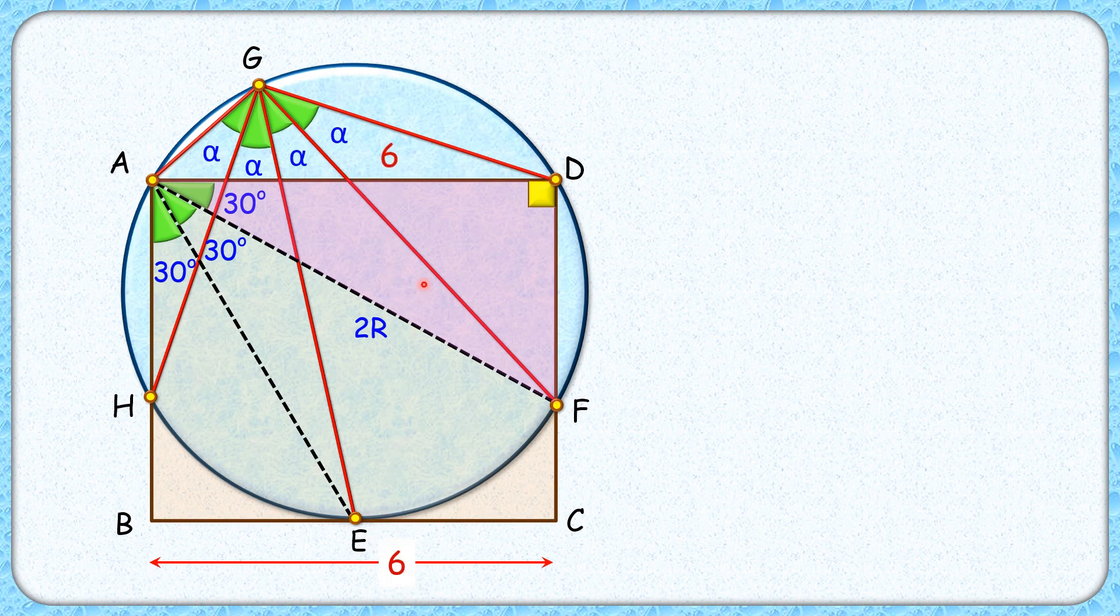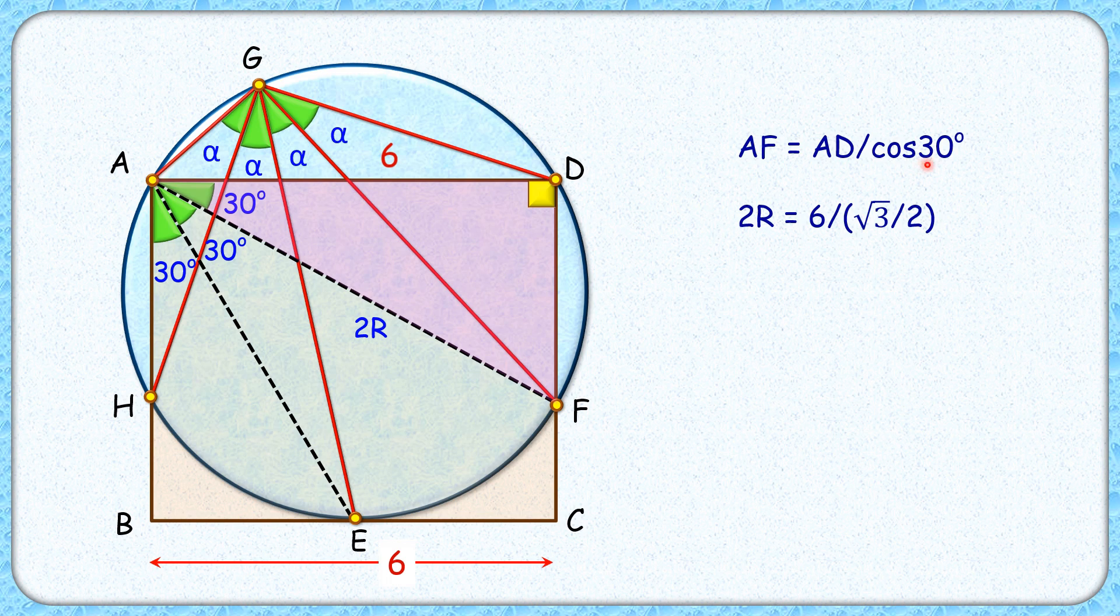Now here in this pink triangle applying trigonometry will get value of AF is AD upon cos 30. Putting the values here, AF is 2R, AD is 6, and cos 30 is root 3 by 2. Solving it will get value of R is 2 times of root 3, or R is 3.46 centimeter and that's our answer.